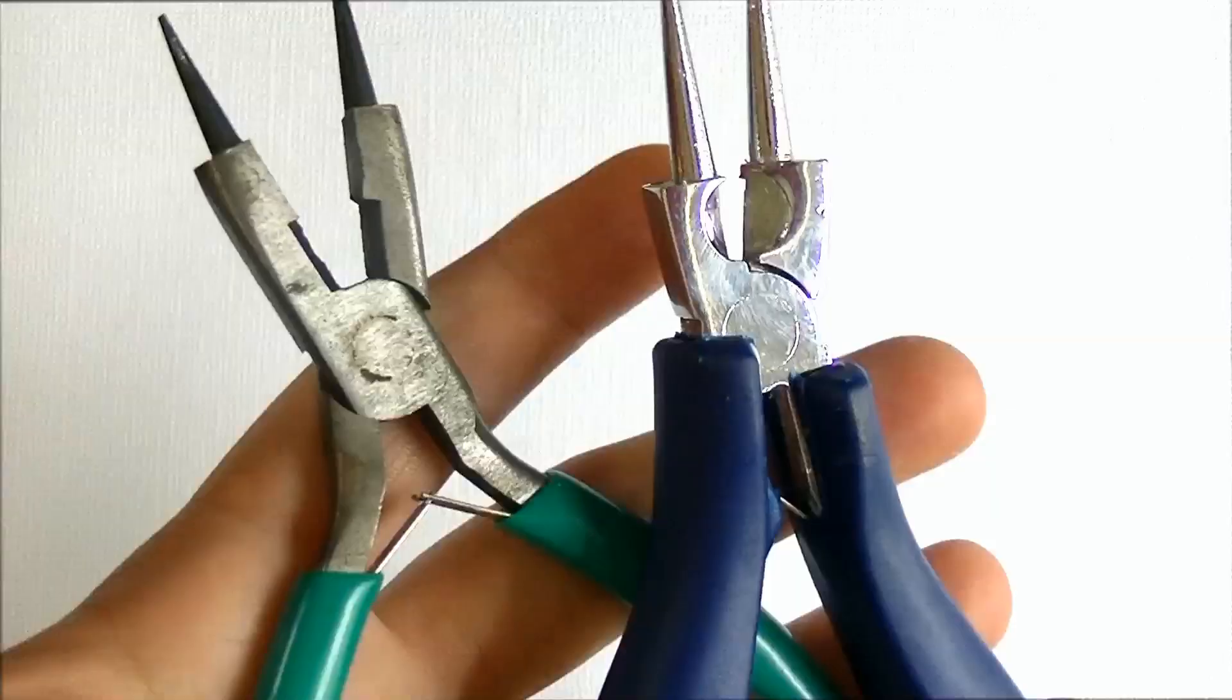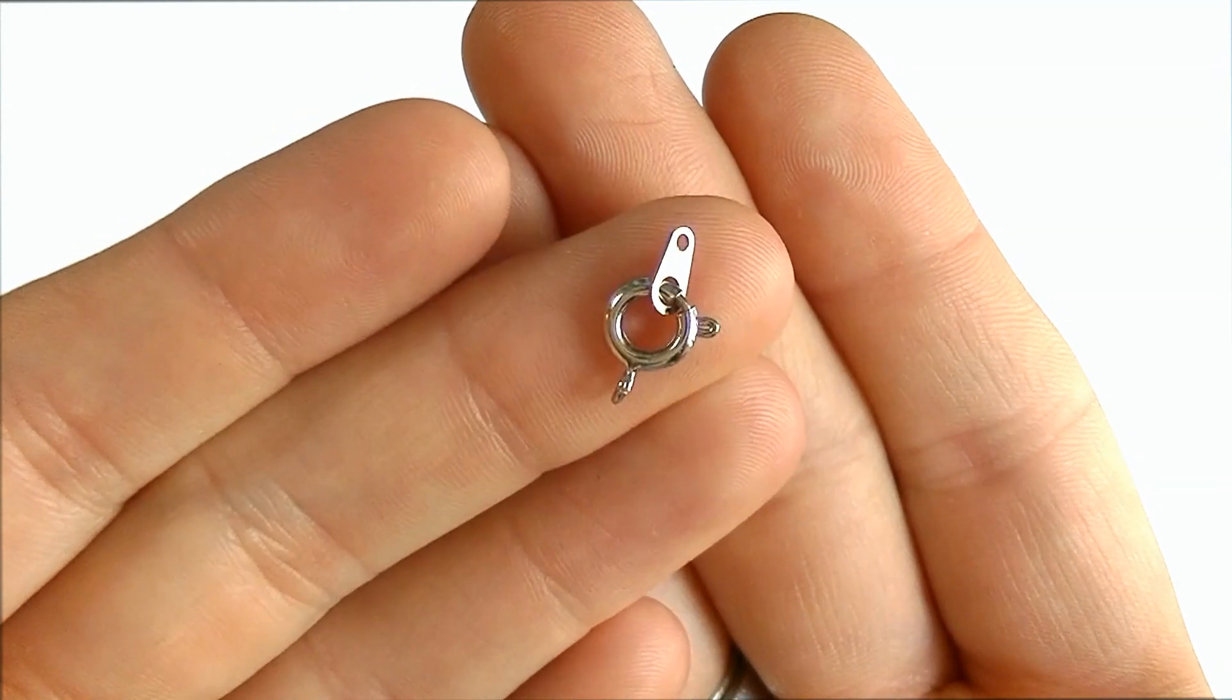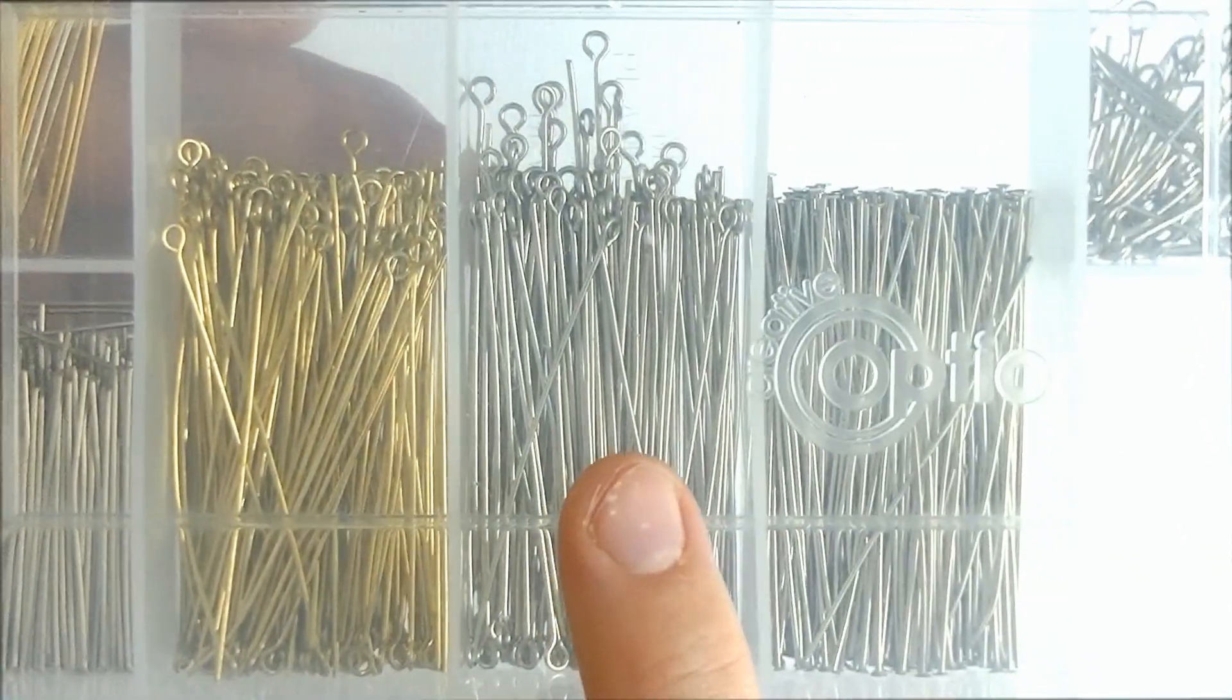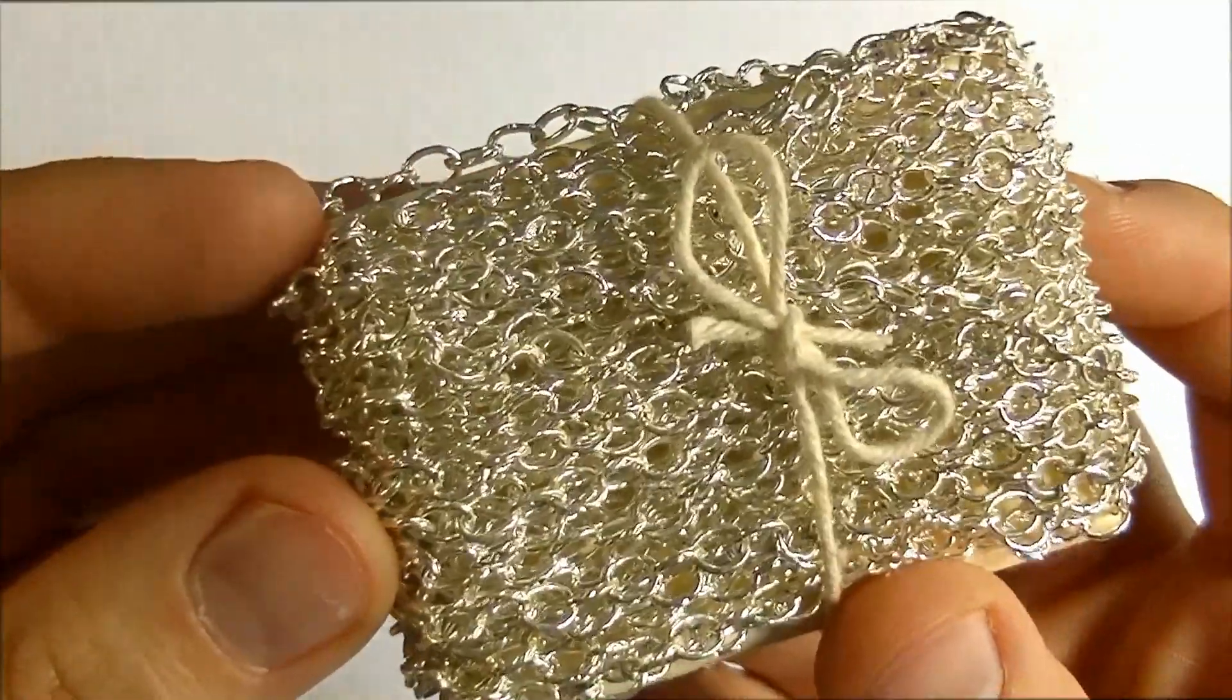The things you'll need are beads of your choice, jewelry pliers, a necklace clasp, eye pins, jump rings, and a chain if you're making this into a partial beaded necklace.